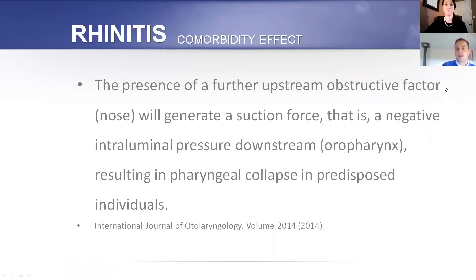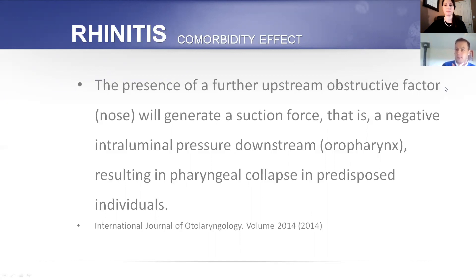In the presence of a further upstream obstructive factor — the nose — it will generate a suction force, a negative intraluminal pressure downstream in the oropharynx, resulting in pharyngeal collapse in predisposed individuals. Obstructive sleep apnea happens when the negative pressure created during breathing is greater than the dilating forces of the airways to remain open. If there's too much negative pressure in the upper airways and they aren't able to counteract it, it can cause them to collapse. Nasal breathing is going to be vital there.